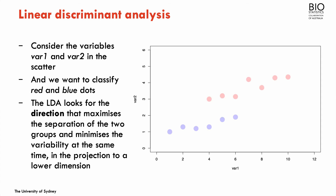There is a nice geometrical interpretation of linear discriminant analysis. Consider two predictors, var1 and var2, and we want to classify two groups — the blue dots and the red dots. What LDA does is find the direction that maximizes the separation of the two groups while also minimizing the variability within the groups when projected onto that lower-dimensional space.